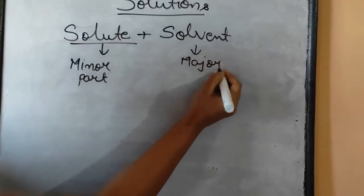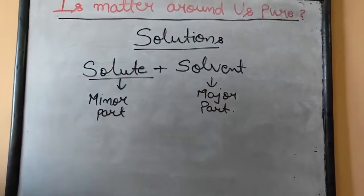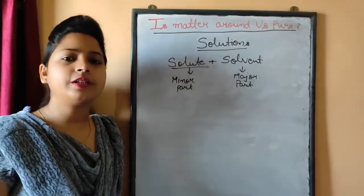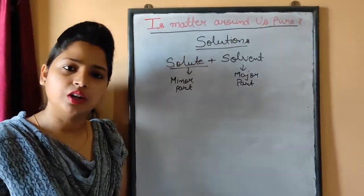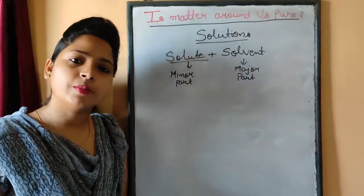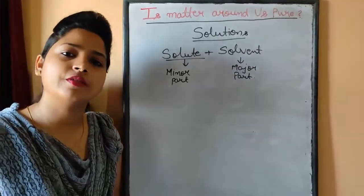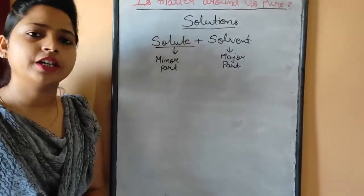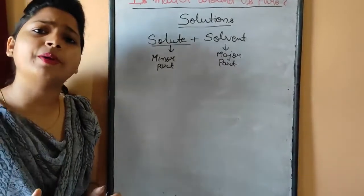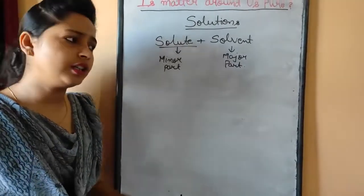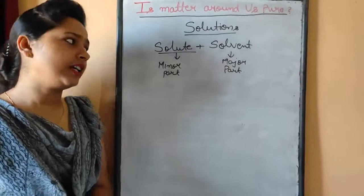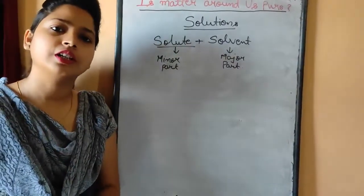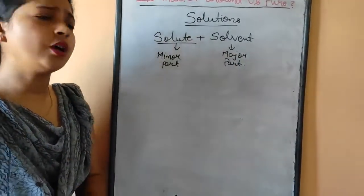Solute plus solvent give rise to the solution. The solute is the minor part and the solvent is the major part of the solution. For example, sugar dissolved in water — sugar is the solute and water is the solvent. Water is taken as the universal solvent. The definition is: the major part present in the solution is solvent and the minor part is solute.